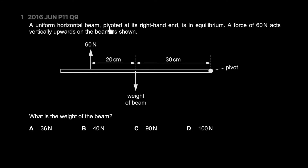A uniform horizontal beam pivoted at its right-hand end is in equilibrium. The weight of the beam acts on the center of its mass and is balanced by a 60 newton force which is 50 newtons away. What is the weight of this beam? The clockwise force generates moment M1 which is clockwise, and the weight generates M2 which is counterclockwise. Since they balance, M1 equals M2.